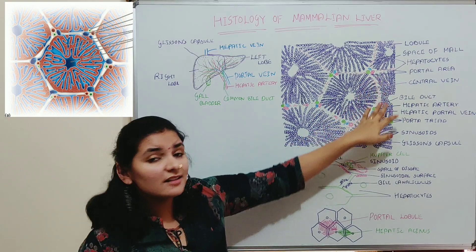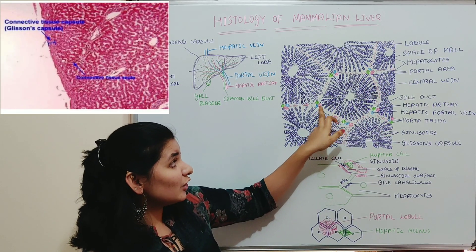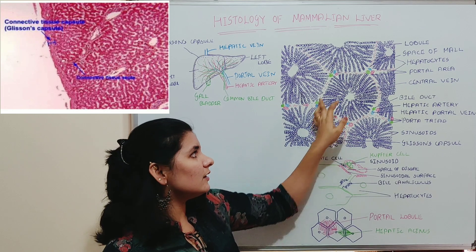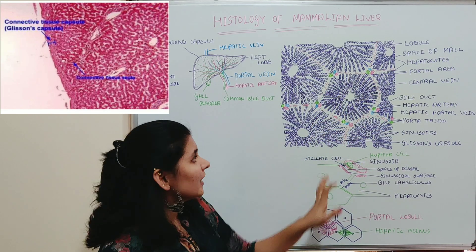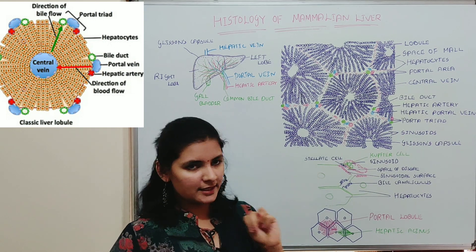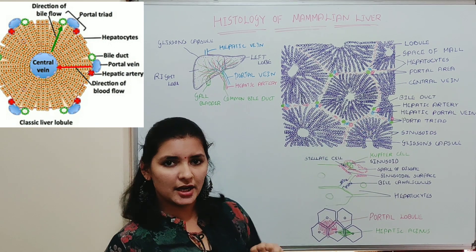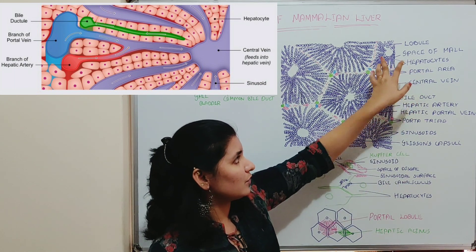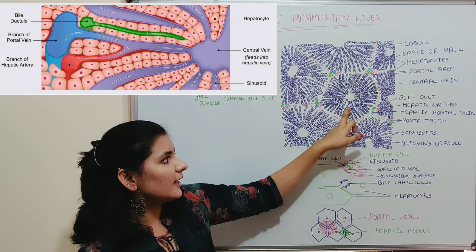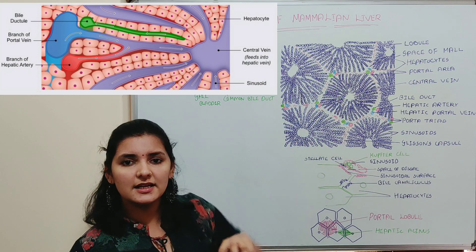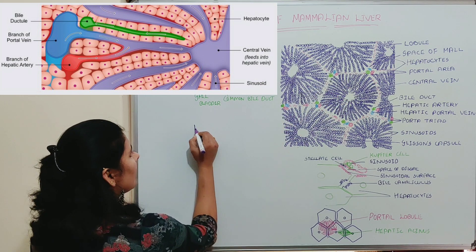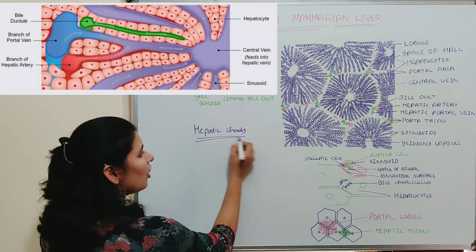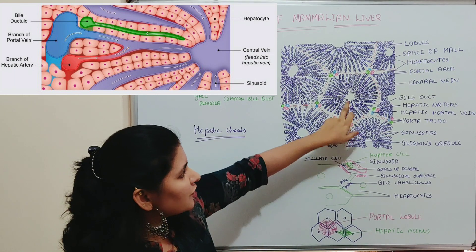If you observe each liver lobule, it is roughly hexagonal in shape and surrounded by a thin layer of connective tissue, which makes liver lobules look hexagonal. Each liver lobule is made up of mainly two components: liver cells and blood channels. Liver cells are also called hepatocytes. These hepatocytes are arranged in irregular, branching, interconnected plates called hepatic cords.